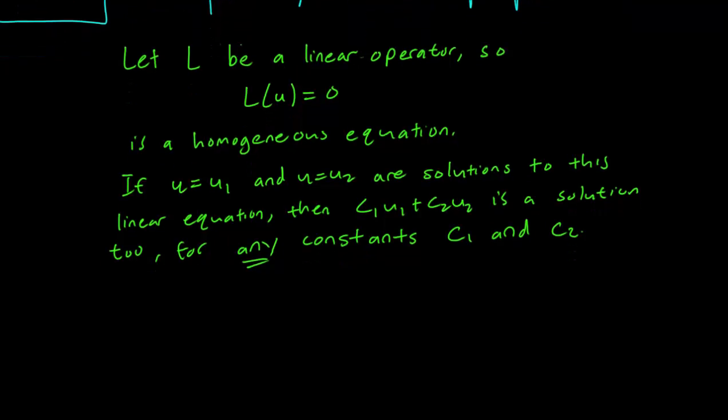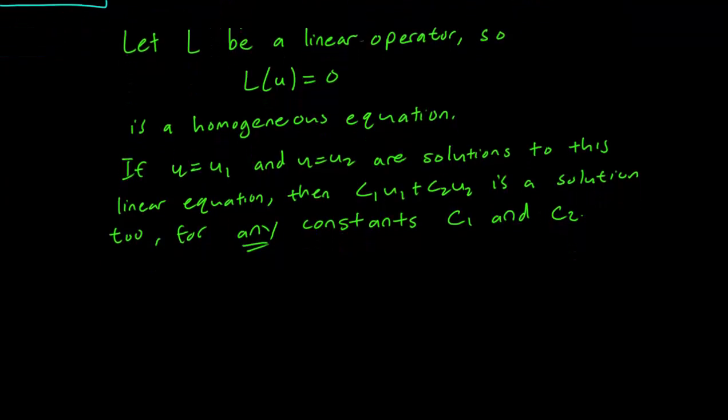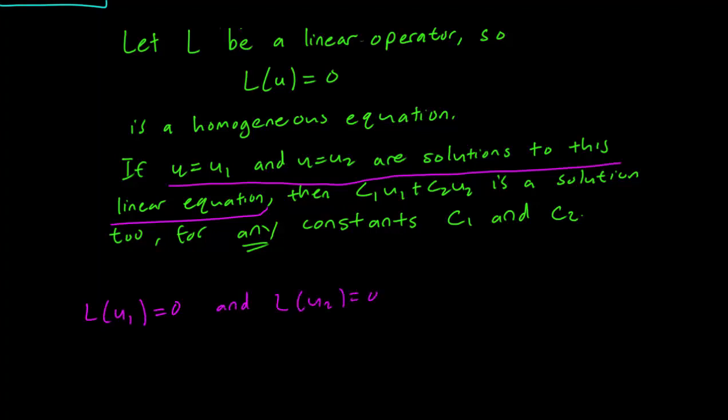So let's see how we can show this. Let's first look at our assumptions. We assumed that u = u₁ and u = u₂ are solutions to this linear equation. What this means is that L(u₁) = 0 and L(u₂) = 0.